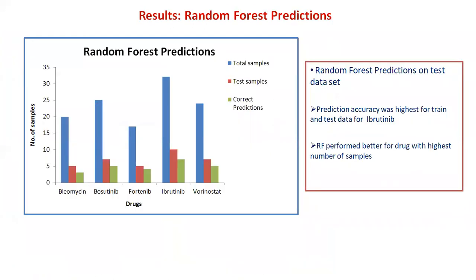Random forest is a classification algorithm based on a decision tree approach that generates multiple decision trees from random subsets of the training set. The total number of correct predictions for bleomycin was 3 out of 5; for positinib, 5 out of 7; for fortinib, 4 out of 5; for ibrutinib, 7 out of 10; and for vorinostat, 5 out of 7. The prediction accuracy was highest for ibrutinib, and random forest performed better for drugs with the highest number of samples.